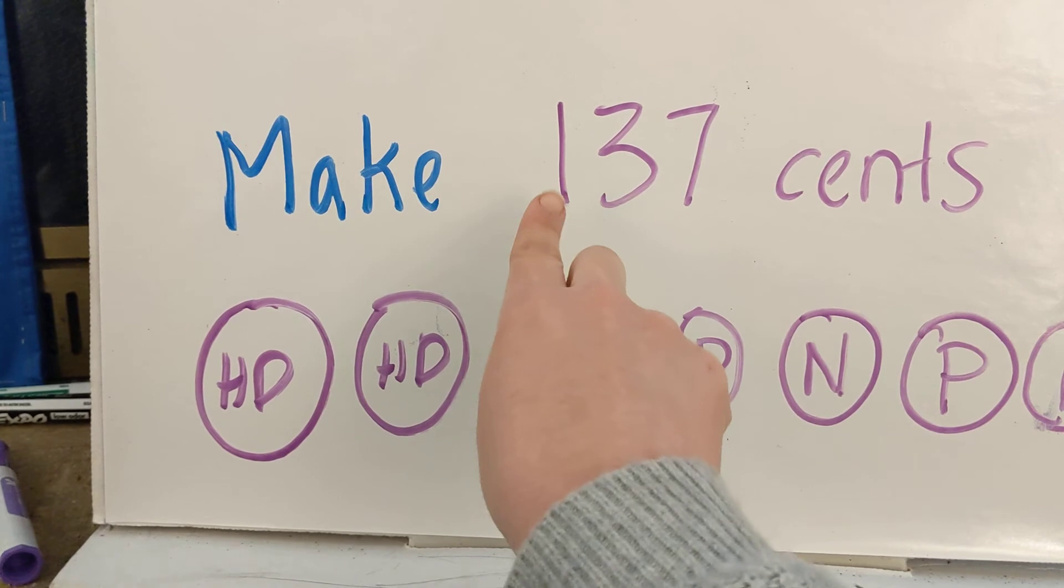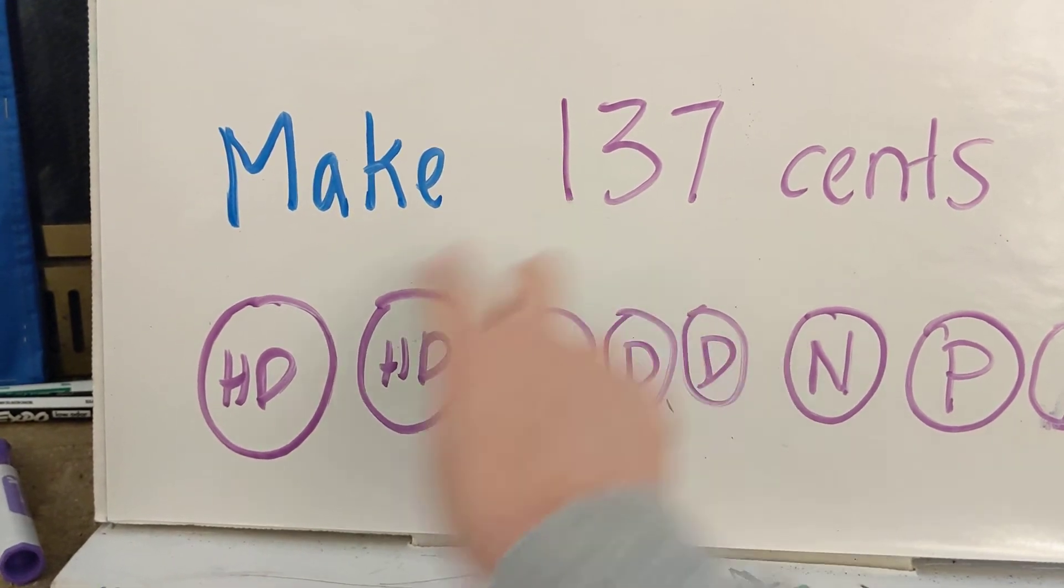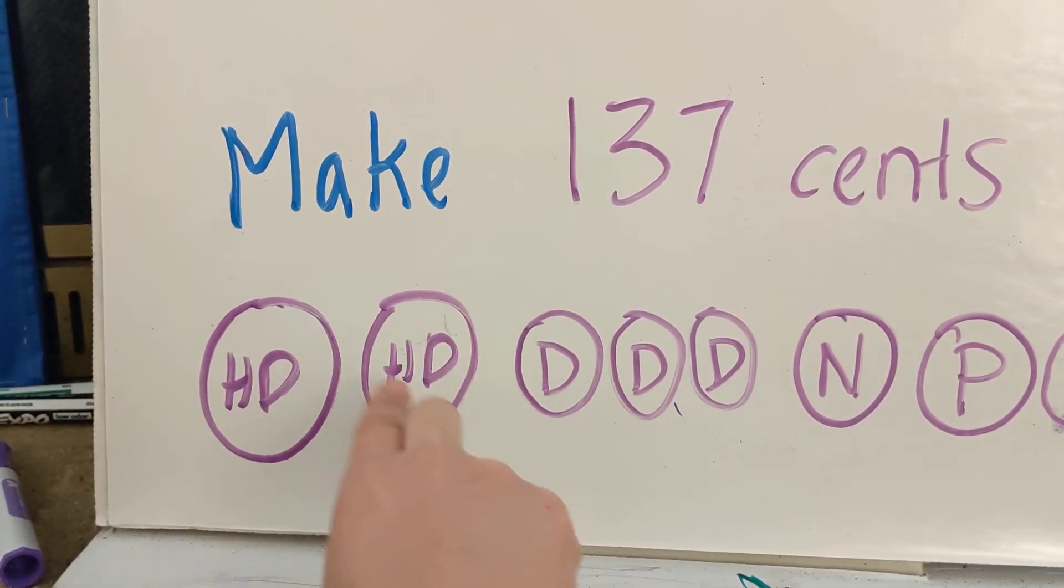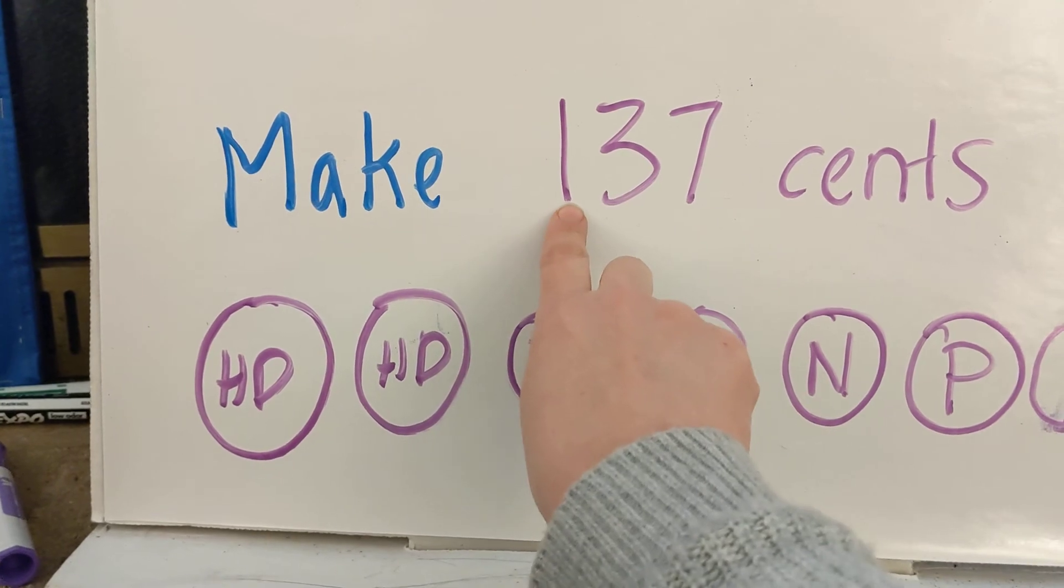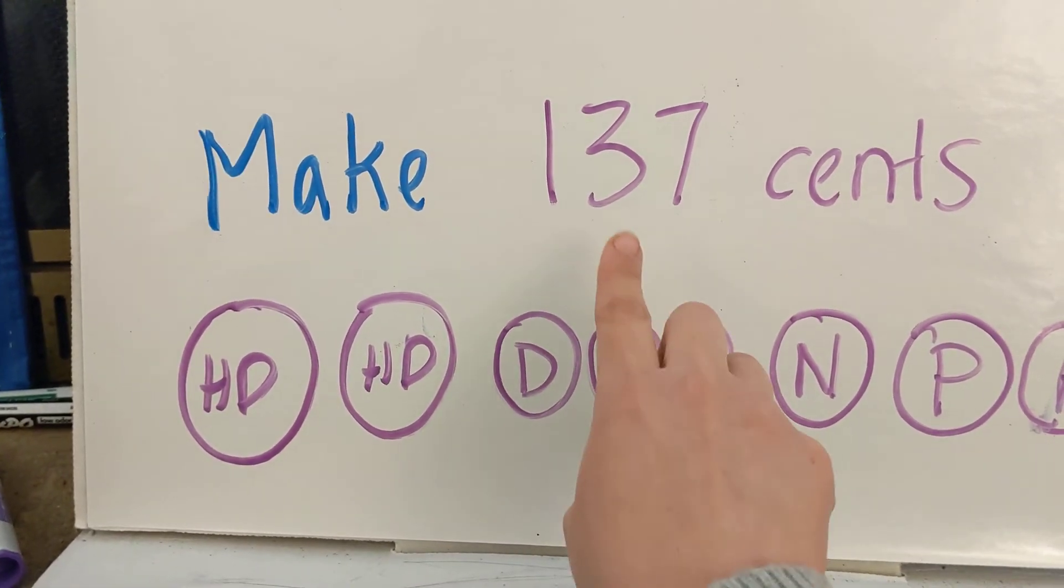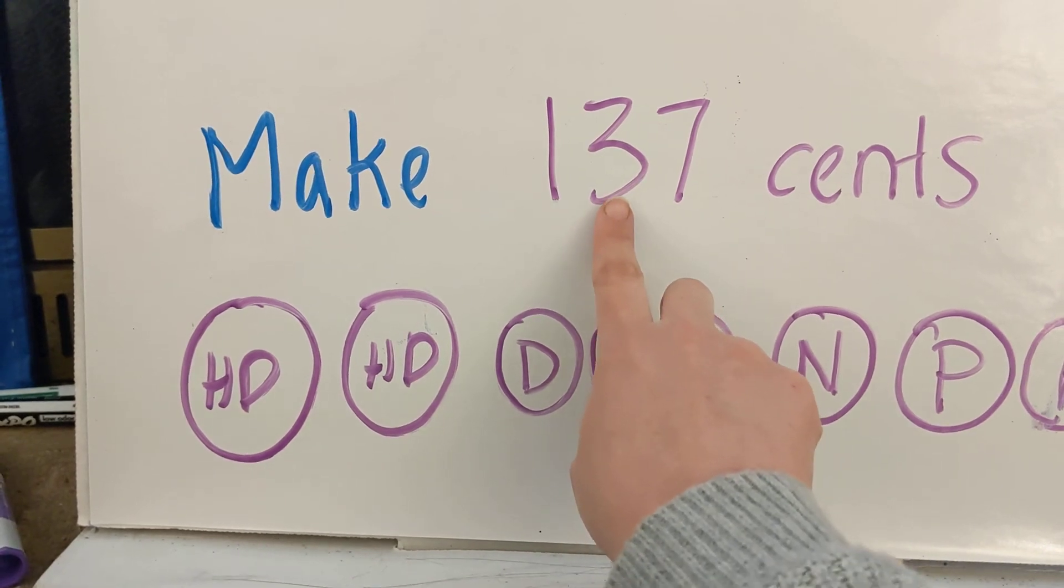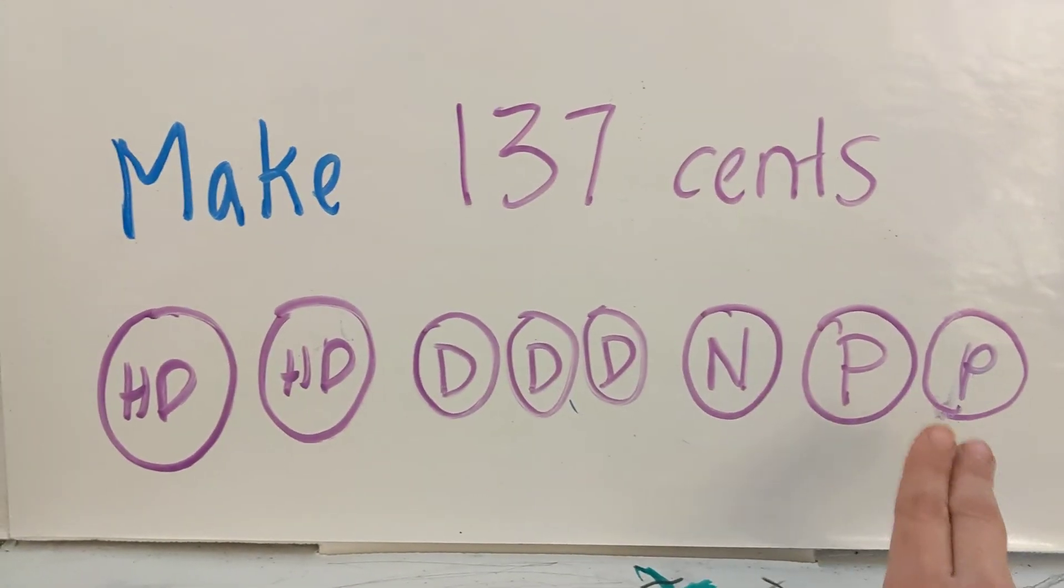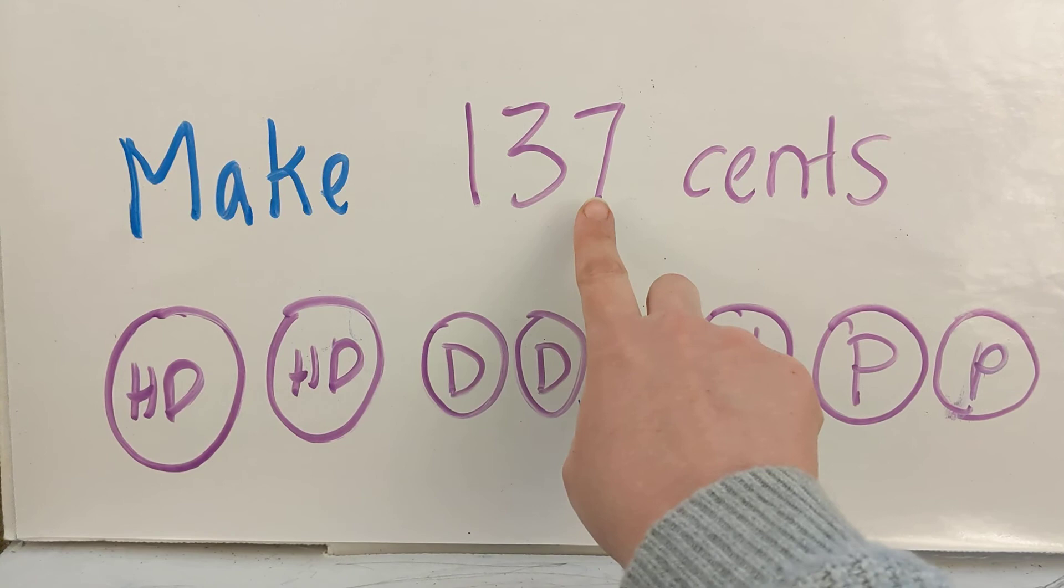So here's my, what I meant to say was hundreds, but it makes my one. These two, fifty plus fifty is one hundred. That's where the one and the hundred spots come from. Three dimes, that's where the three comes from in the ten spot. Nickel, penny, penny, that's where the seven and the ones place comes from.